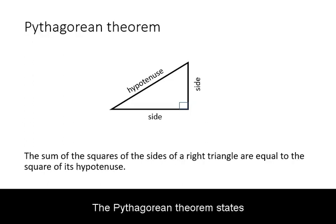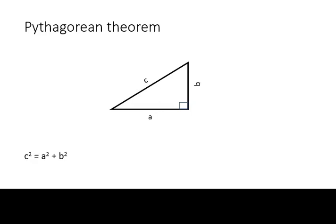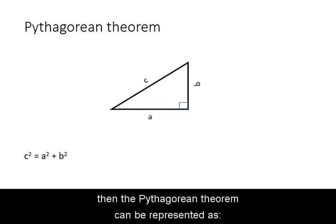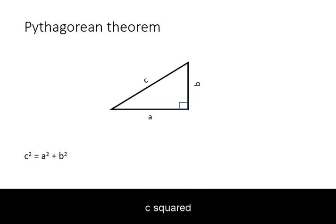The Pythagorean theorem states that the sum of the squares of the sides of a right triangle are equal to the square of its hypotenuse. If we use the symbols a and b for the sides and c for the hypotenuse, then the Pythagorean theorem can be represented as c squared equals a squared plus b squared.